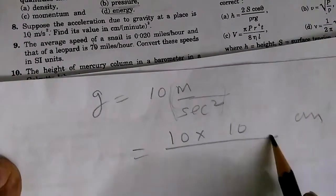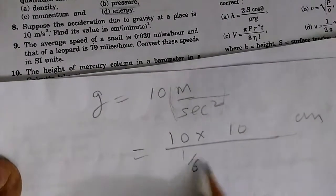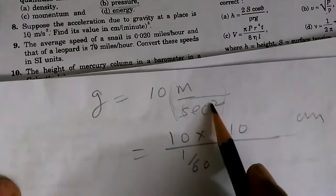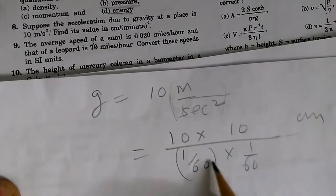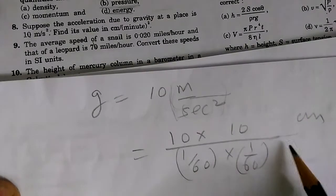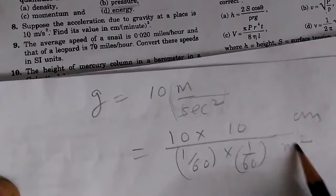Now for every one second, we have 1 by 60th of a second and the unit is per second square. So we'll multiply it by 1 by 60, multiply it by 1 by 60, this much of minute square.